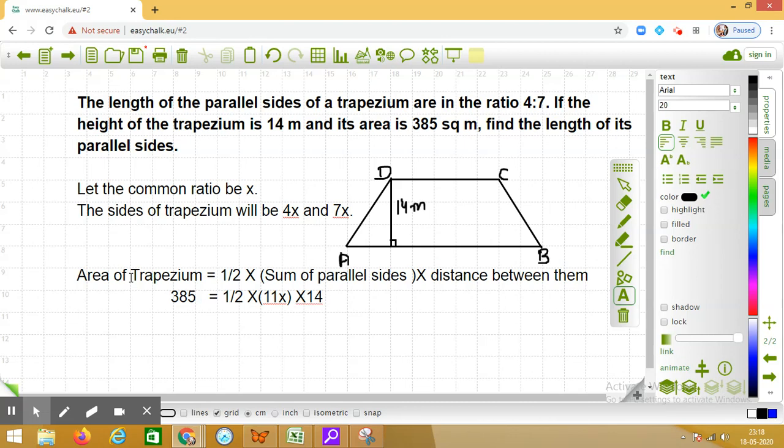So let us simplify this. So this becomes 385 equal to 11x into 7.